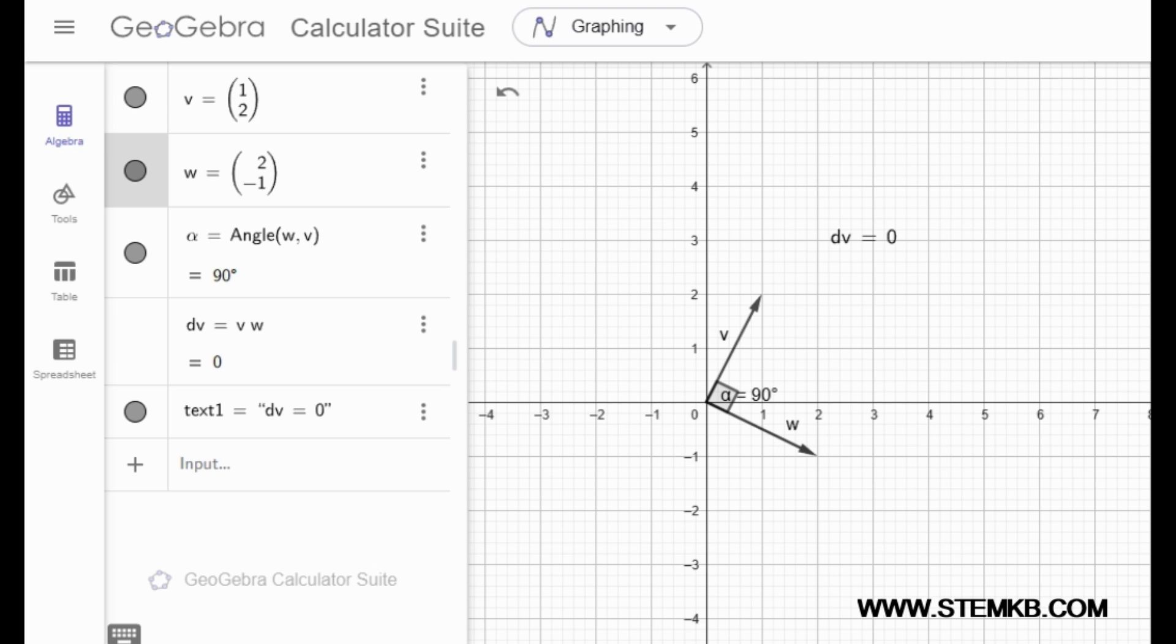But doesn't multiplying vectors usually give you a whole different kind of answer? You're right, and that brings up an important point about the dot product. It actually gives us a scalar. A scalar is just a fancy word for a single number. So even though we're dealing with vectors, which have both magnitude and direction, the dot product gives us a simple number without any direction. That's why it's often called the scalar product. And that scalar, the result of our dot product, tells us if our vectors are perpendicular or not.